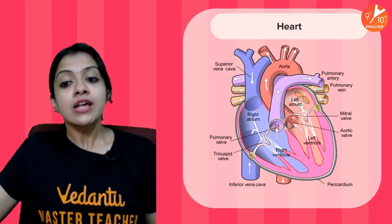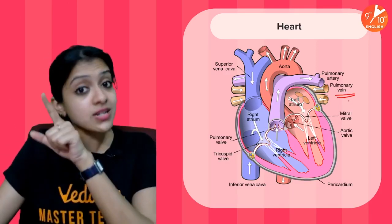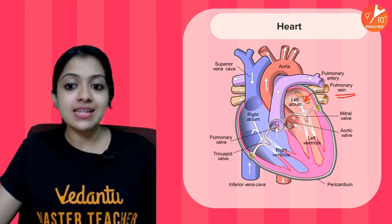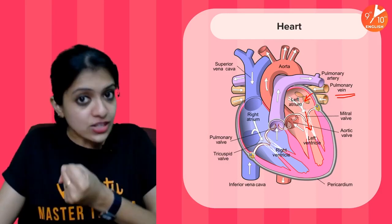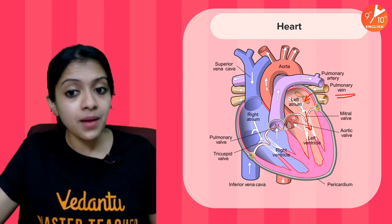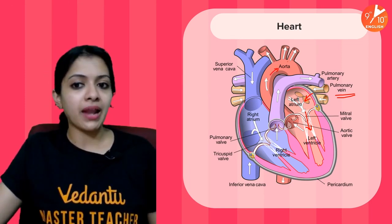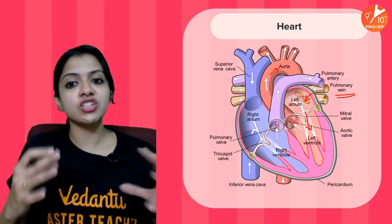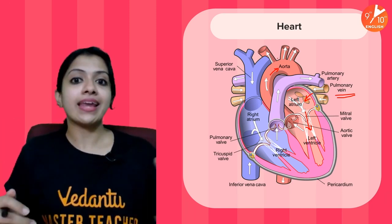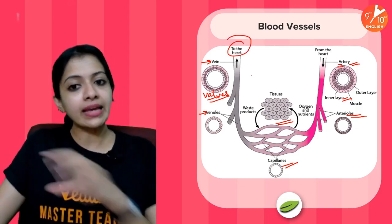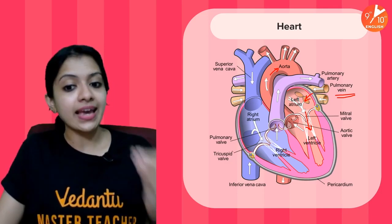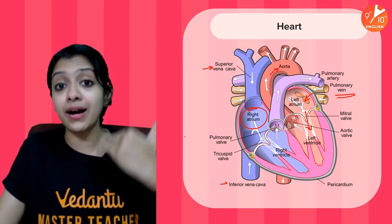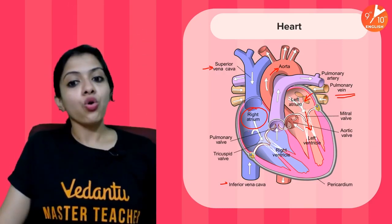Pulmonary veins bring oxygenated blood from the lungs into the left atrium. When the atria contract, this blood flows into the left ventricle. Then the ventricles contract, and from the left ventricle the oxygenated blood is pumped through the aorta — the largest artery in the body — and through its branches via different arteries and arterioles to the different parts of the body. This is how oxygenated blood is transported across the body.